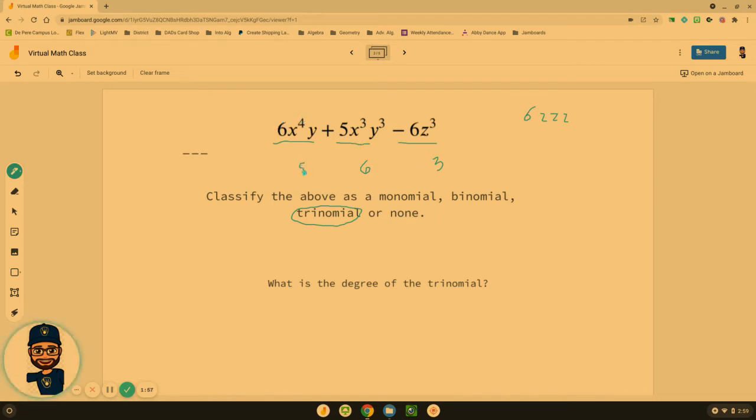This one would have a degree of five for that term because we have four x's and one y. So each term might have its own unique degree, sometimes it might be the same numbers. But when we classify the degree of the entire trinomial, of the entire thing, we are looking for the largest degree.